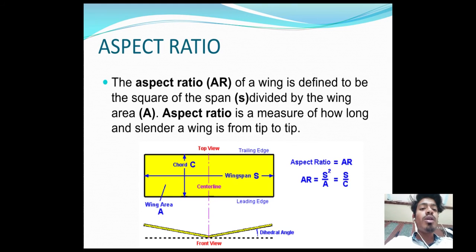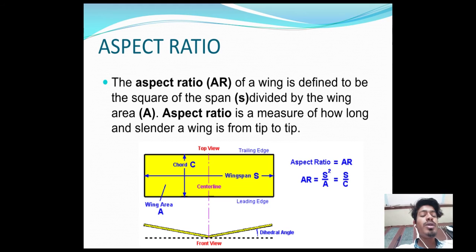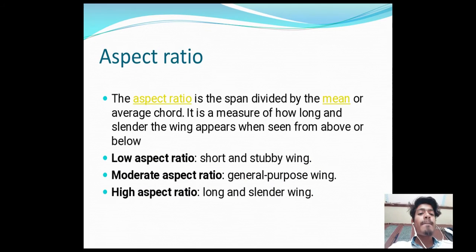The aspect ratio of a wing is defined as the square of the span divided by the wing area. Aspect ratio is a measure of how long and slender a wing is from tip to tip — wing span. Aspect ratio can also be expressed as the span divided by the mean or average chord, and it measures how long and slender the wing appears when seen from above or below.